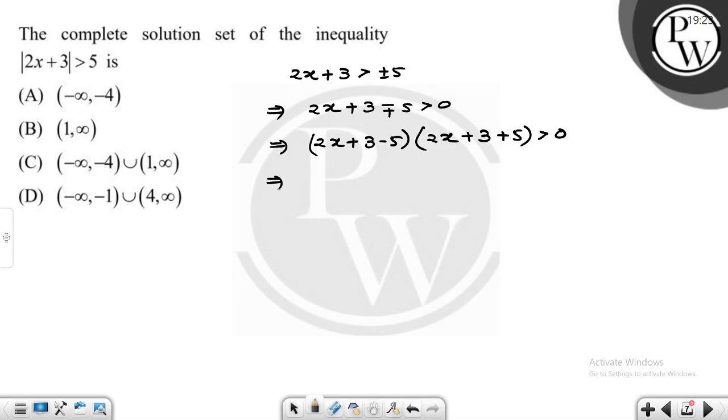This means we have 2x minus 2 or 2x plus 8 is greater than 0. So we have x minus 1 and x plus 4.